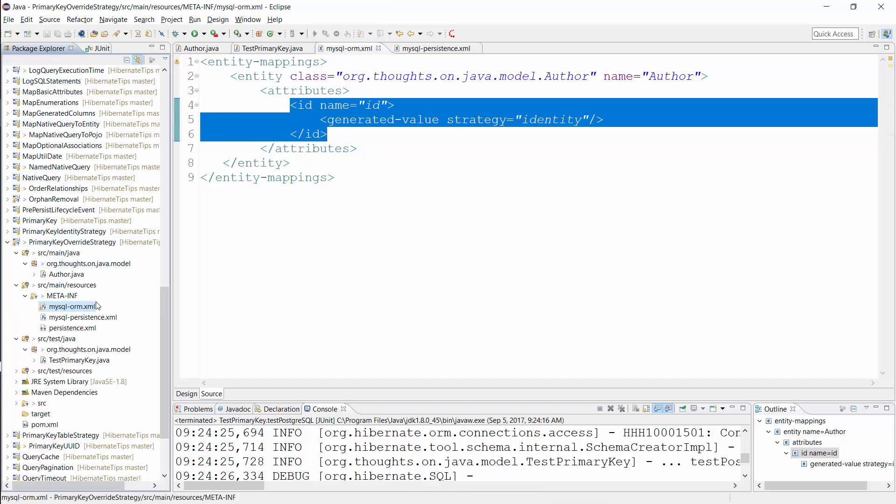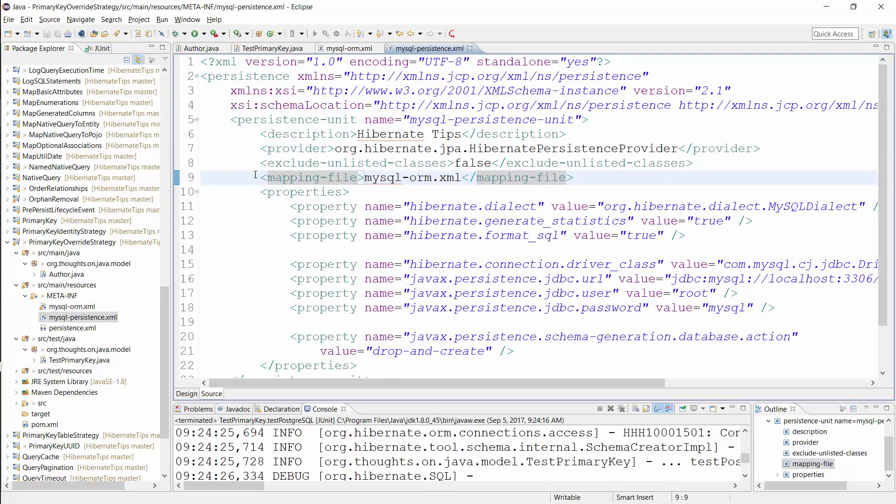And as you can see over here, I don't use the default filename in this example because I want to keep all files in the same project. So I need to reference the mapping file in the persistence.xml file. You can see that here. OK, that's all.